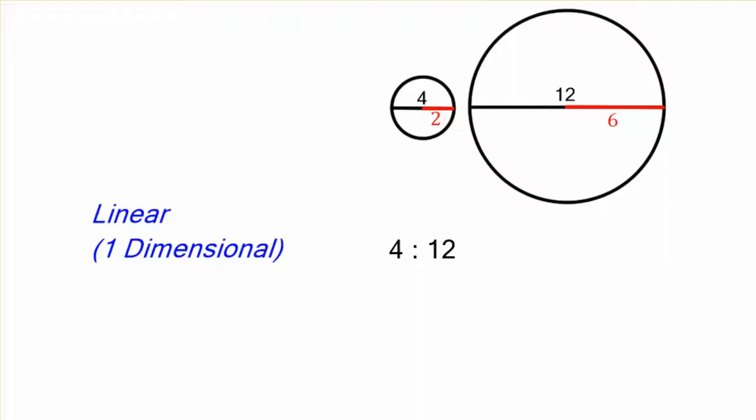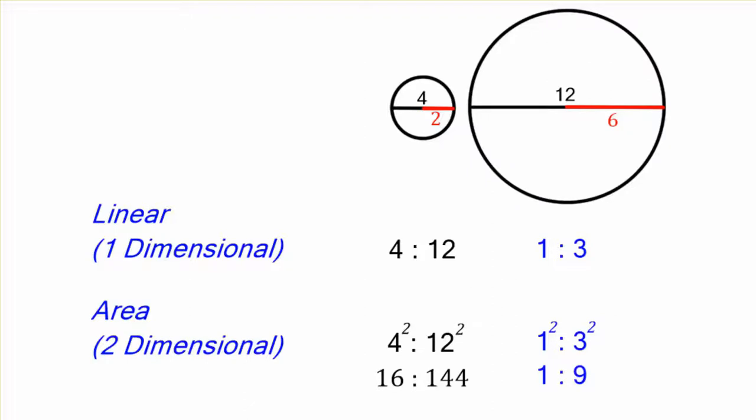So again, linear, anything linear, one dimensional, it's going to be 1 to 3. You can take that 4 and 12. The area is going to be 4 squared to 12 squared, which is exactly the same ratio as 1 squared to 3 squared. If you were to square that, you get 16 and 144. 16 goes into 144 9 times. That ratio will always be the same. You don't even have to simplify it. You could just use the 4 and the 12.